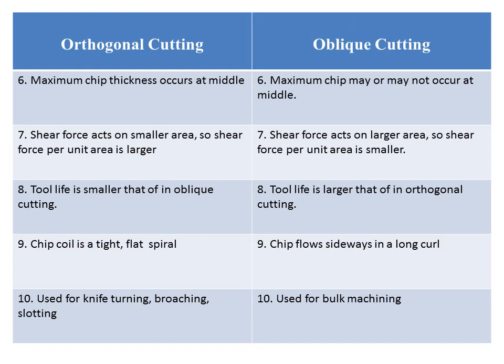In orthogonal cutting there is a maximum chip thickness, and similarly in oblique cutting there is a maximum chip thickness. These are the main differences between orthogonal and oblique cutting — you can note about ten such points of difference.